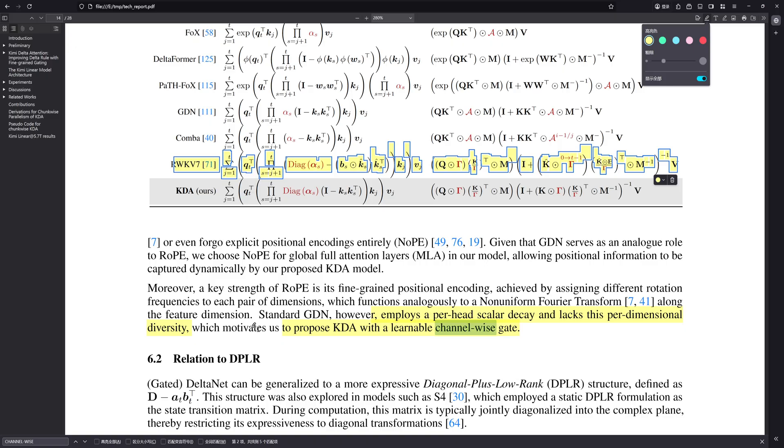So yes, KDA might handle local, feature-level memory brilliantly, but for those really long-range global interactions, it seems you still need that quadratic attention safety net. That 3.1 ratio feels less like just inefficient choice and more like a practical necessity driven by quality concerns.